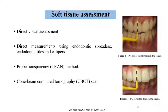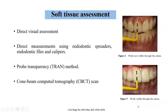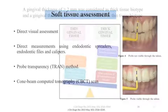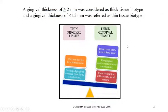For soft tissue assessment, evaluation can be done by direct visual assessment, direct measurement using endodontic spreaders, endodontic files, and calipers. The TRAN method — probe transparency method — involves placing the probe to the sulcus; if it is not visible, that means it is a thick gingival type. CBCT scans can also be used: if gingival thickness is more than 2 mm, it is considered a thick biotype, and if it is less than 1.5 mm, it is a thin tissue biotype.